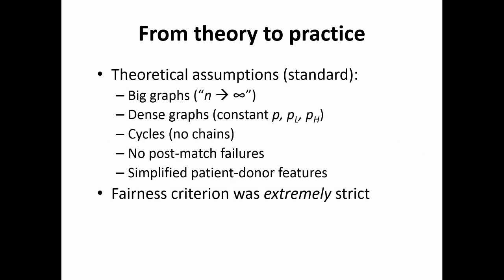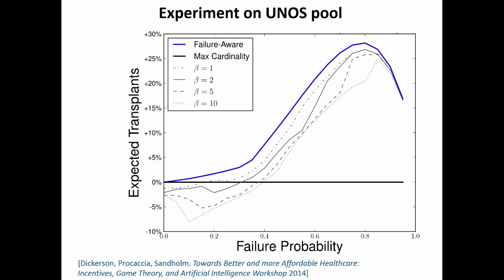In practice on the real UNOS pool, we favor highly sensitized patients by a factor of 1 plus beta — so beta equals 1 means counting them as twice as important, beta equals 10 means 11 times as important. Across different failure probabilities, you can get a 25% increase in the number of transplants in the realistic region of failure rates compared to the myopic status quo approach.